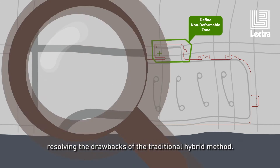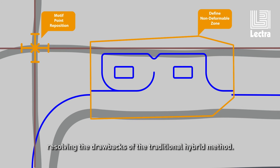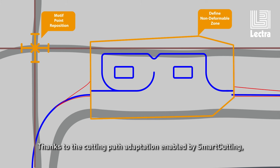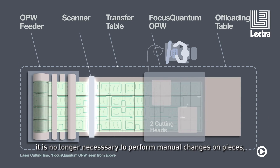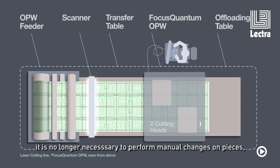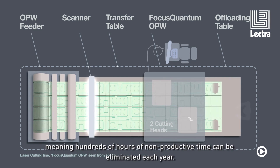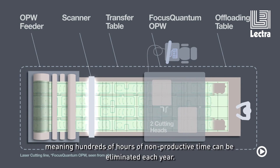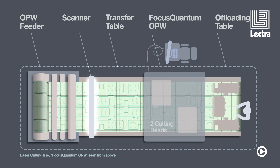Resolving the drawbacks of the traditional hybrid method, thanks to the cutting path adaptation enabled by Smart Cutting, it is no longer necessary to perform manual changes on pieces, meaning hundreds of hours of non-productive time can be eliminated each year.